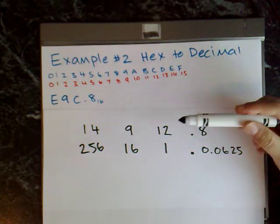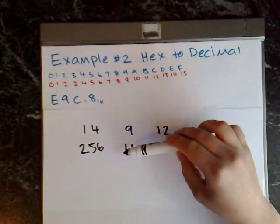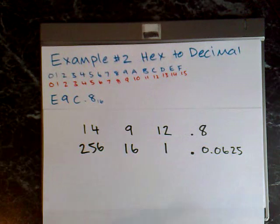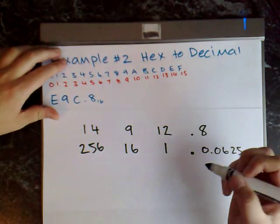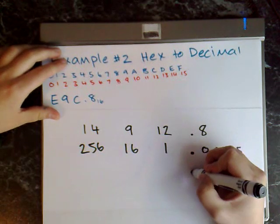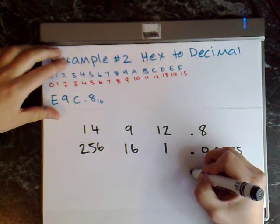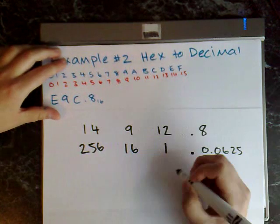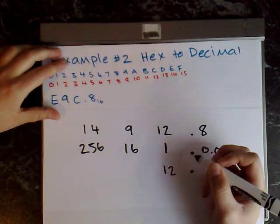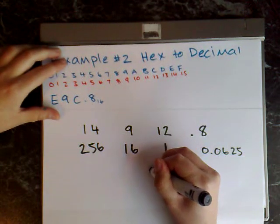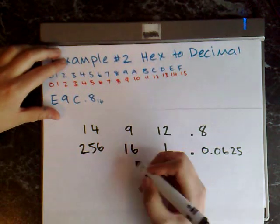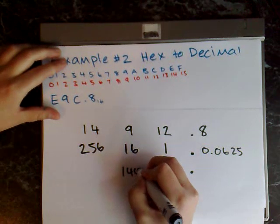Okay so the next step now is to multiply each number together and then add them all up. So 1 times 12 is 12, plus 9 times 16, that's 144.